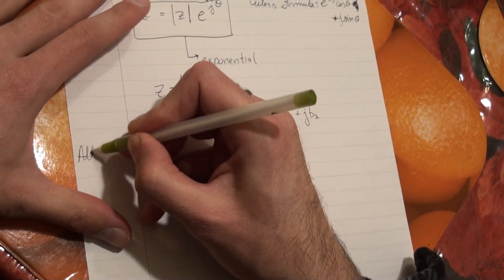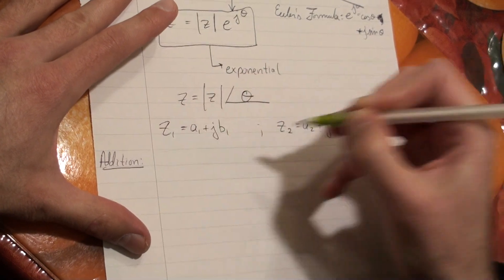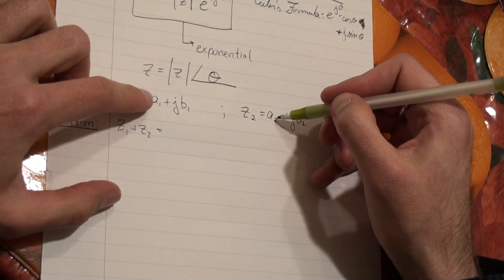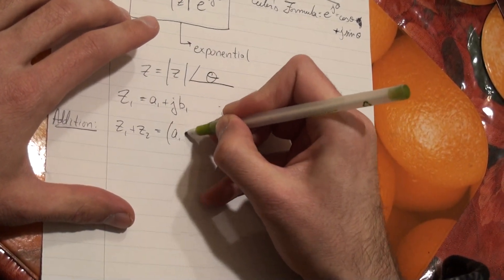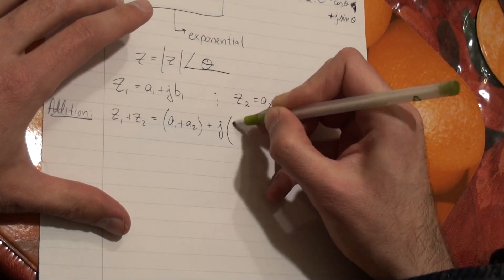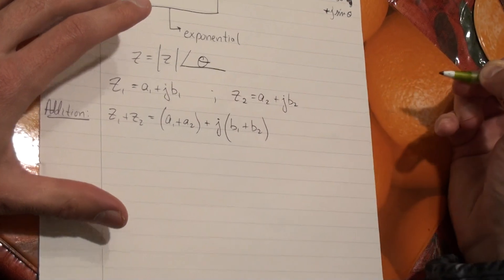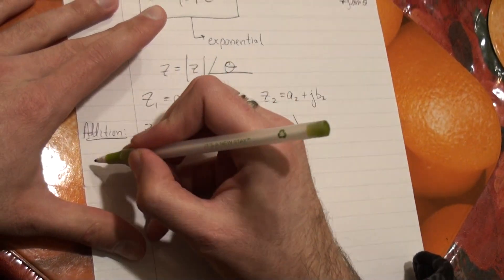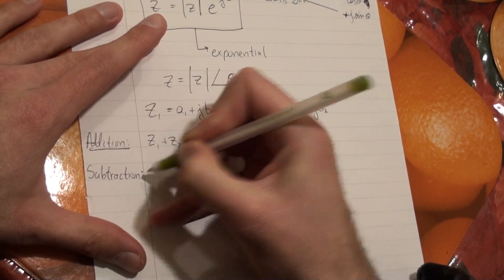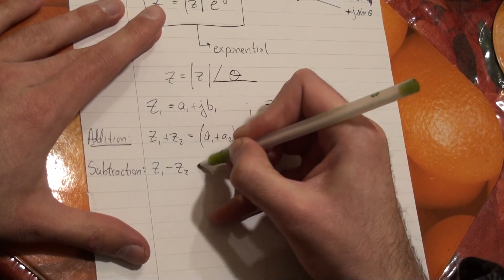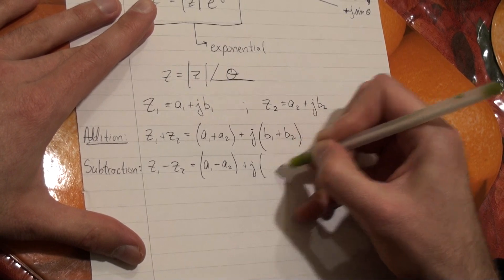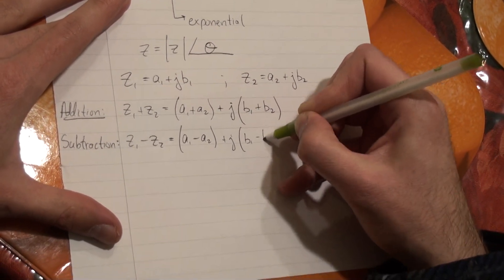For addition, Z1 plus Z2: you add your real parts — A1 plus A2 — then put plus J and add your imaginary parts. Similarly for subtraction, you do the same thing but subtracting: Z1 minus Z2, you subtract your real parts and then subtract your imaginary parts.